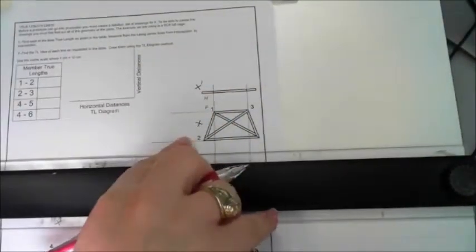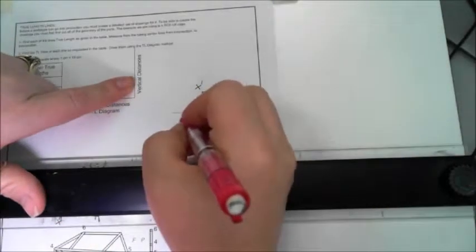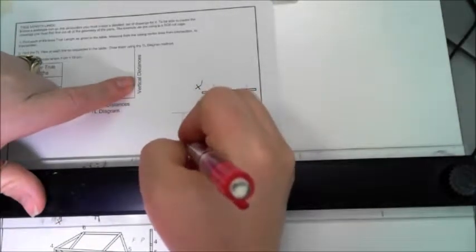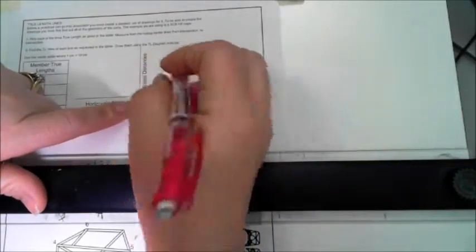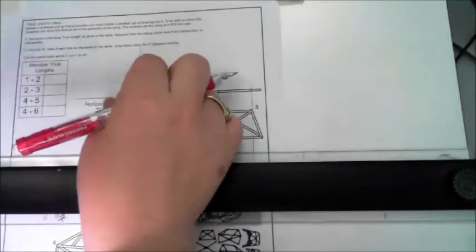All right, now I'm going to get ready to do the true length diagram here. This distance from here to here is the D1 and so that's what you're going to find. It's the same distance for both of the pieces. It'll start here and it'll rotate out for it. So that's your point of reference here.